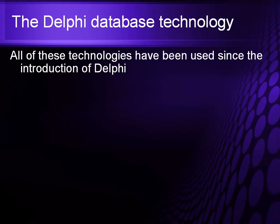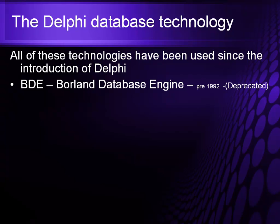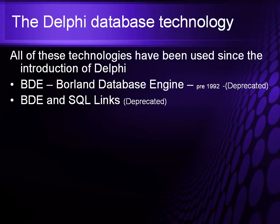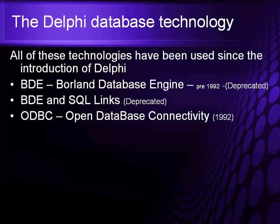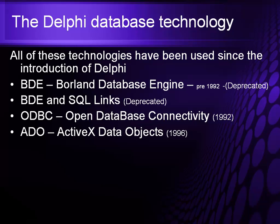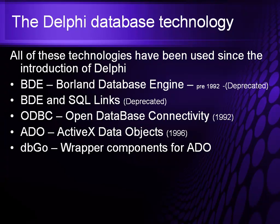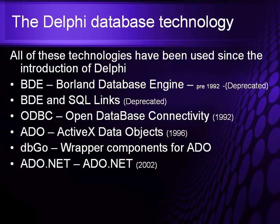The Delphi database technologies used over the years include the BDE, or Borland Database Engine, introduced in 1992 and definitely deprecated. There's also BDE and SQL Links, also deprecated. There's ODBC, Open Database Connectivity, introduced in 1992. And there's ADO, ActiveX Data Objects, introduced in 1996 by Microsoft. We also have DBGO, which is a set of wrapper components for ADO. We also have ADO.net, which was introduced in 2002.